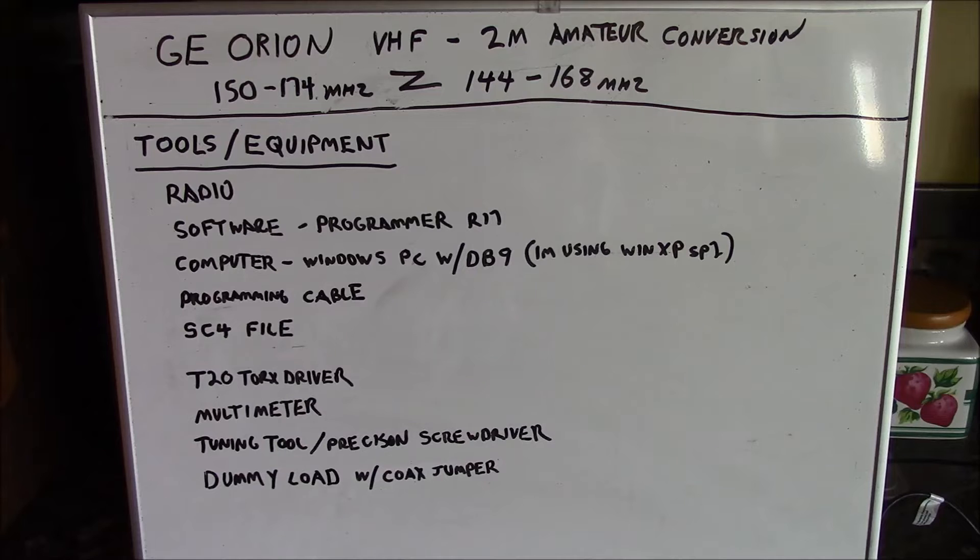The first is the radio itself. The next will be programming software. The version of software we're going to use in this video is Programmer Revision 17. A computer, which is just a Windows PC with a DB9 connection, and I am currently using Windows XP Service Pack 2 as an operating system. A programming cable - if you look up here, you'll look at the card to my video that I made last week that teaches you how to make your own programming cable. And next will be an SC4 file, and we're going to talk in depth about that in a second, and I'm going to teach you how to roll your own. And a T20 Torx driver to open up the radio.